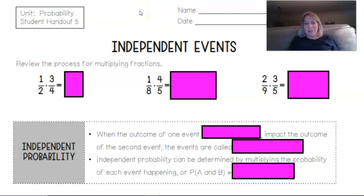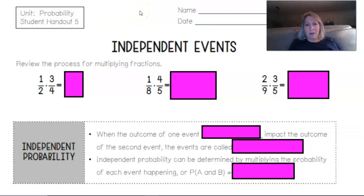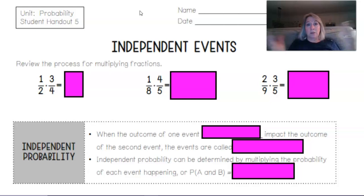Hello students! Today we're going to speak about independent events. When we have compound probability, we have more than one event going on at a time. What we're going to do is multiply the probabilities of each singular event together.